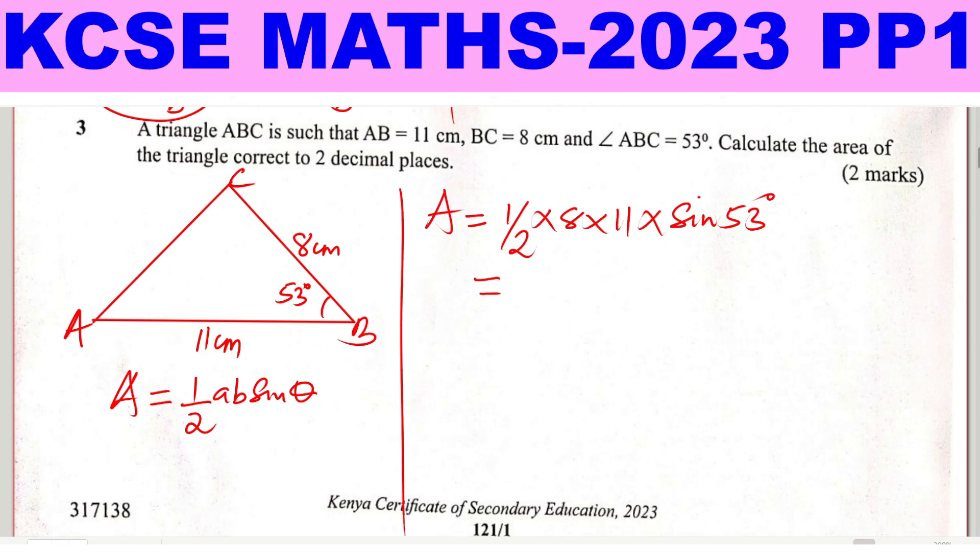And you get, correct to two decimal places, you get 35.14 cm squared, correct to two decimal places.